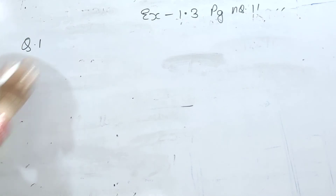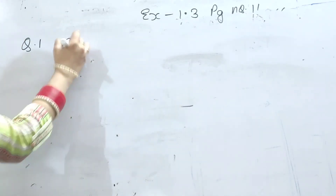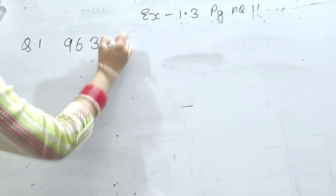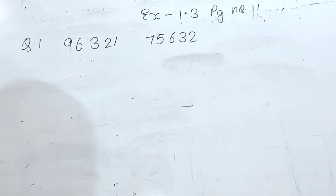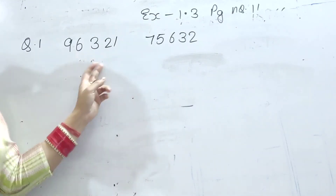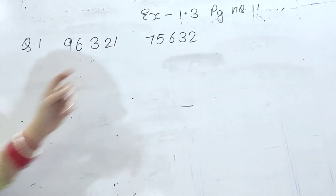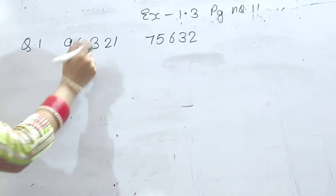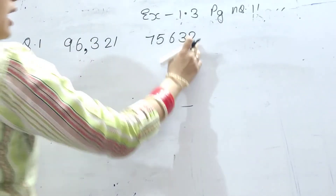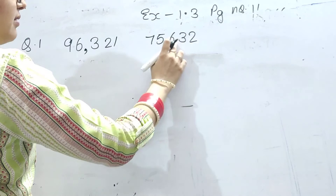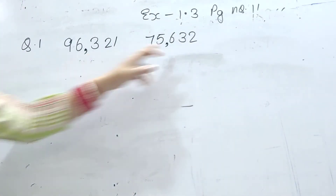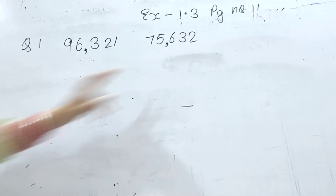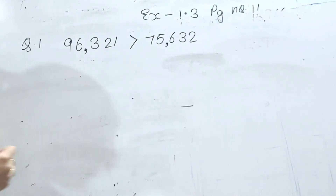Question number 1: 96,321 and 75,632. In dono numbers ka pehle hume periods mark karne hai. Ones, tens, hundreds, thousands, ten thousands. Again: ones, tens, hundreds, thousands, ten thousands. Ab in dono me se kaun sa number bada hai? 96,321.